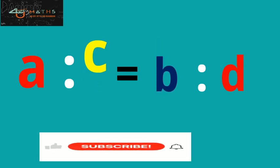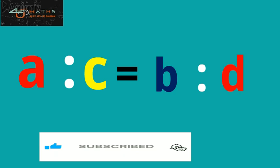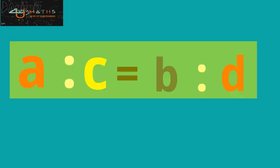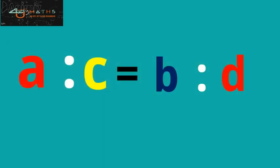That is, if the second and third terms interchange places, then the four terms are still in proportion. This means that in a proportion, if the middle terms are interchanged, the value of the proportion will remain the same and will not change.